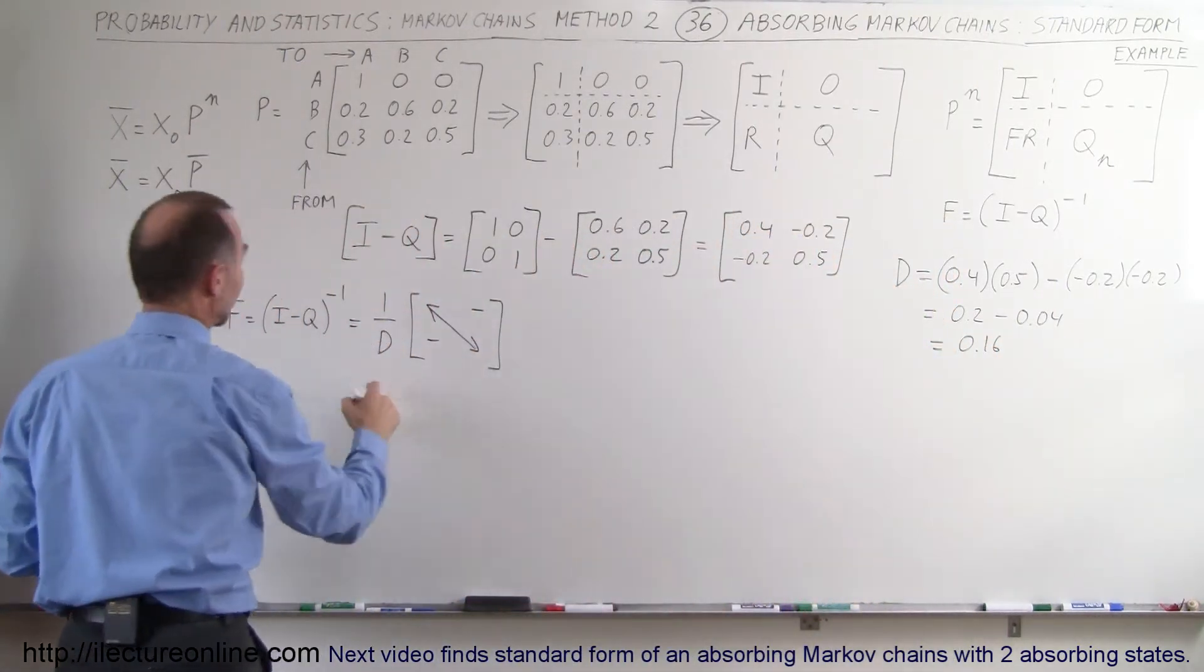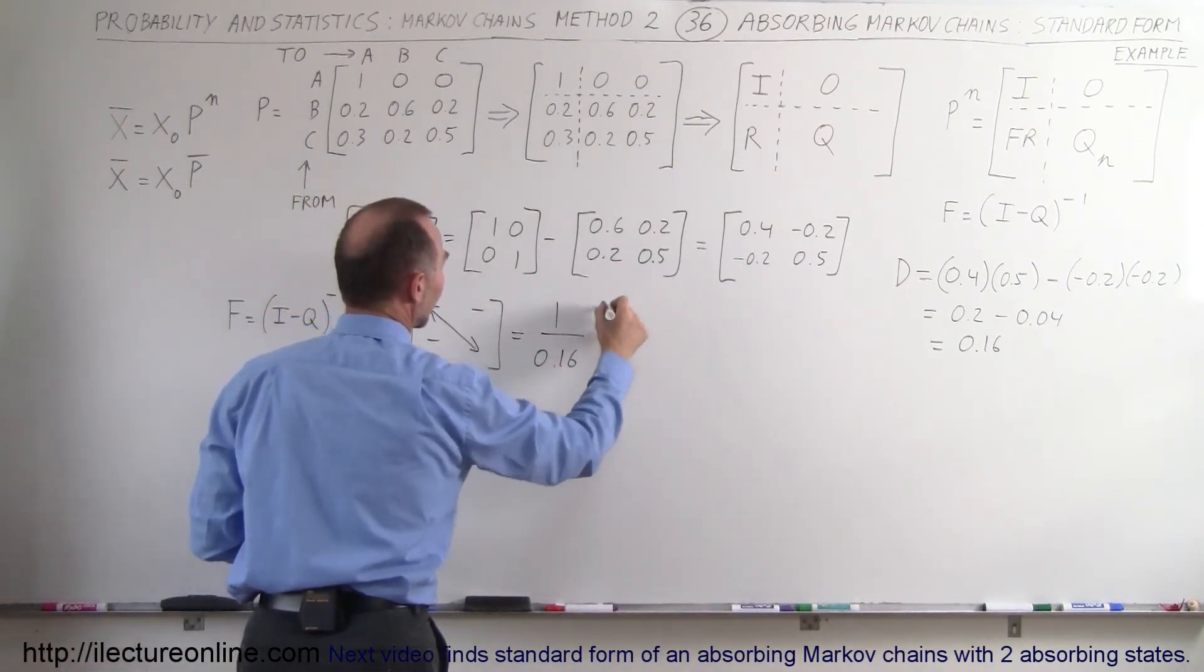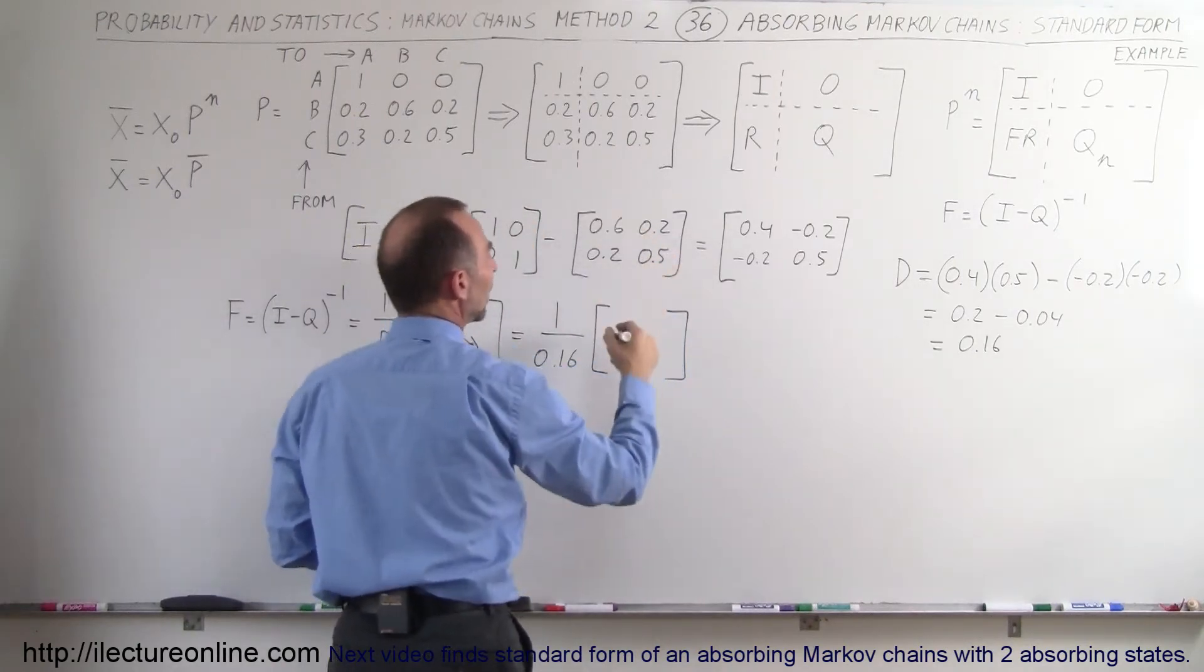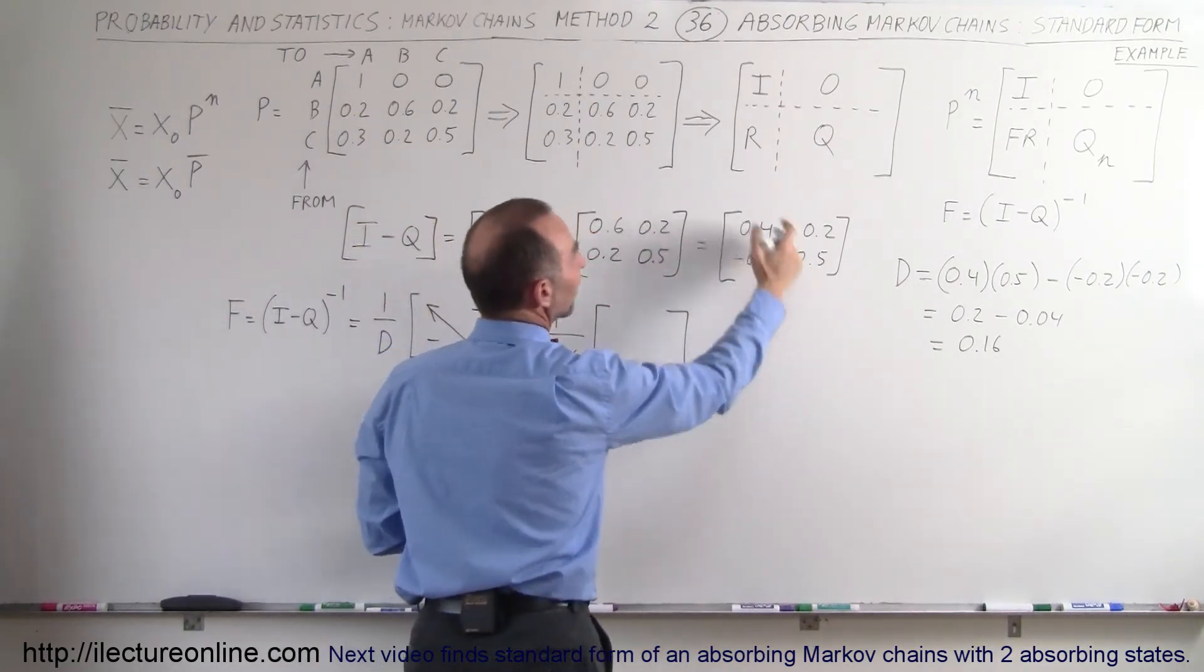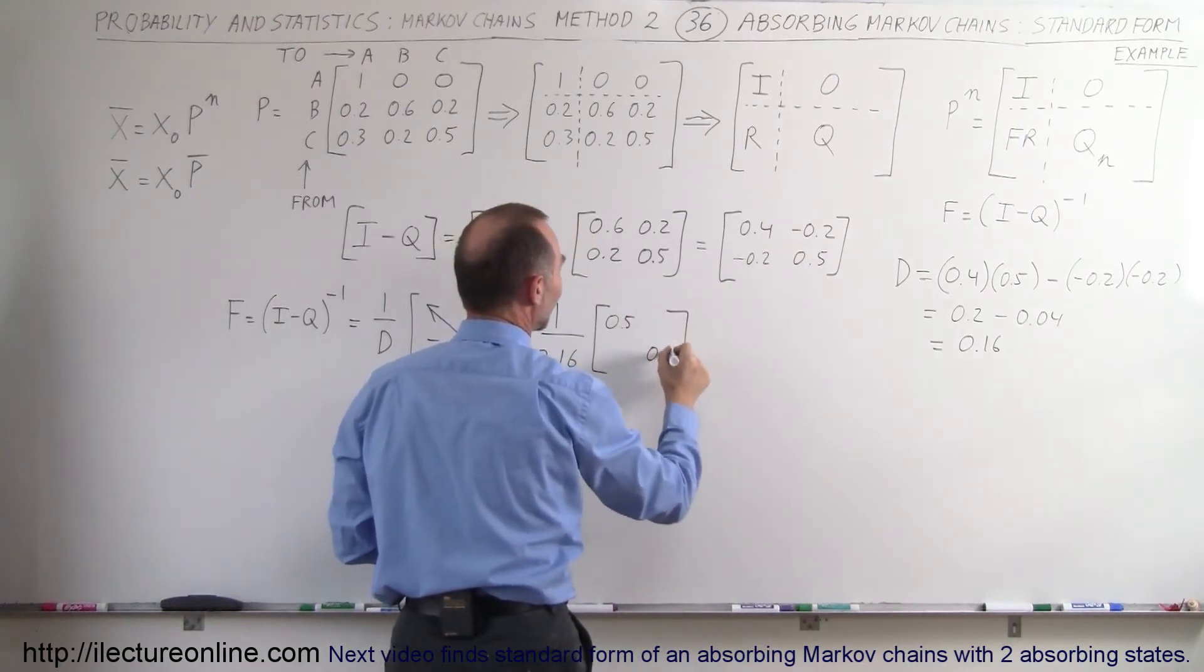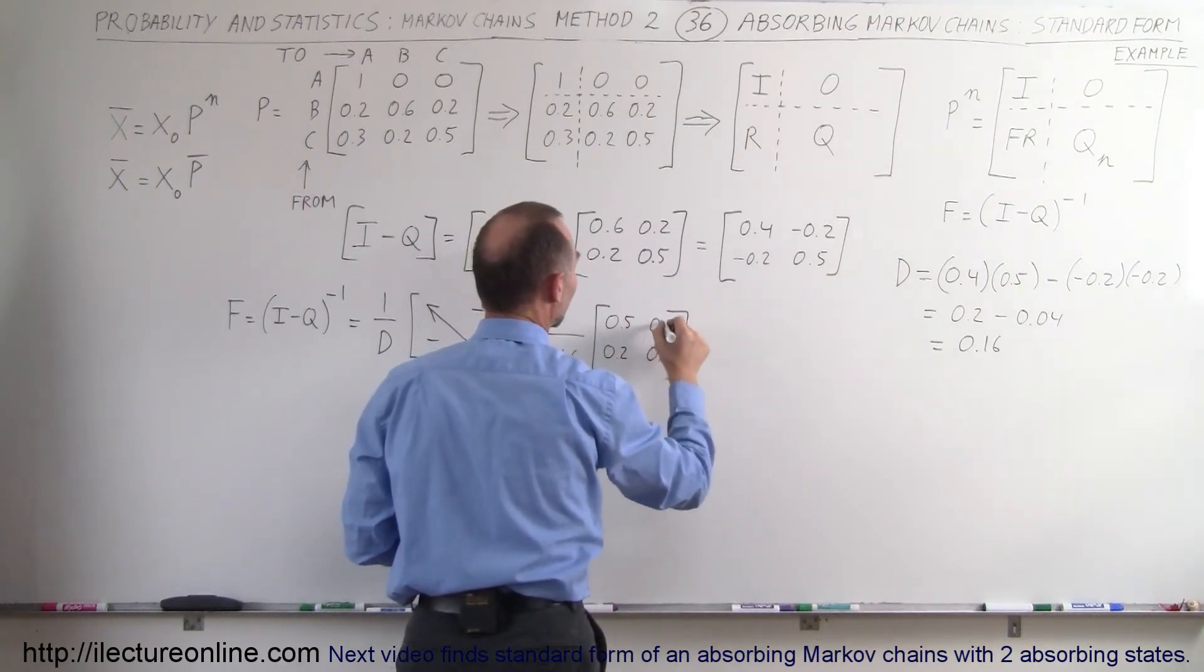So now we go over here. So this is equal to 1 over 0.16 times the same matrix but with these elements interchanged—oh I got to go over here—these two elements interchange 0.5, 0.4, and those two elements change signs so this is 0.2, 0.2.